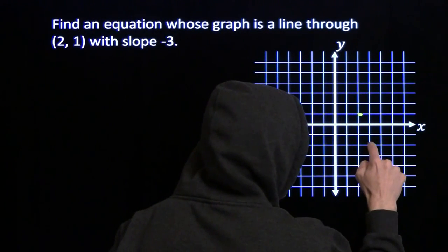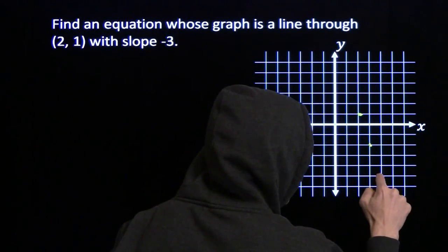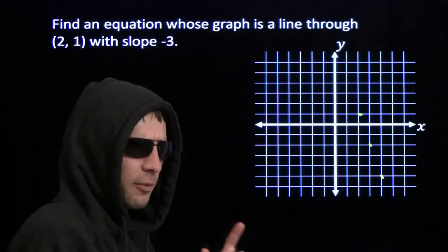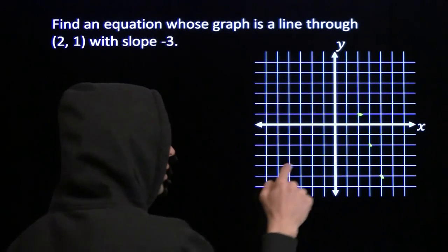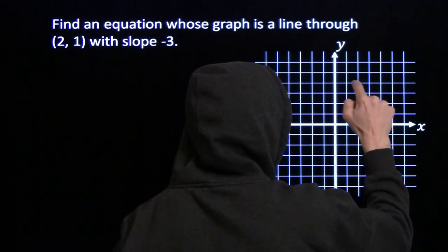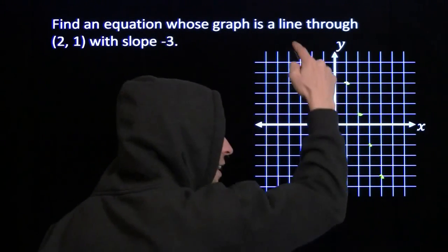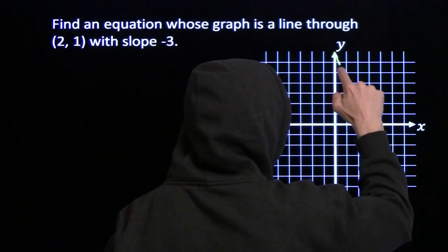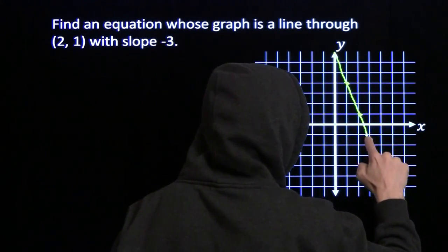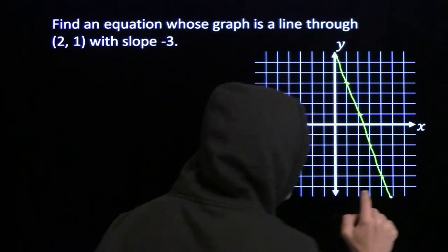We can reverse that. If we're gonna go up 3, we have to go left 1. Again, because the slope is negative. Up 3, left 1. Now we can connect these dots. And we got ourselves a line.